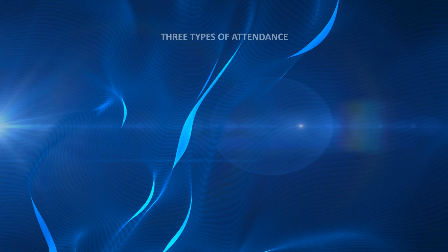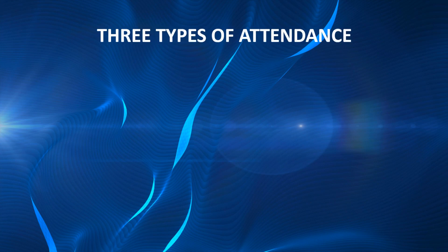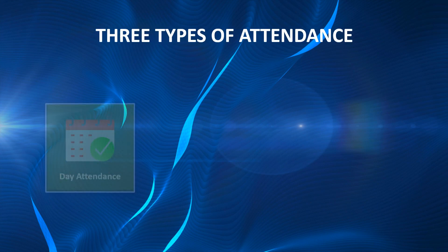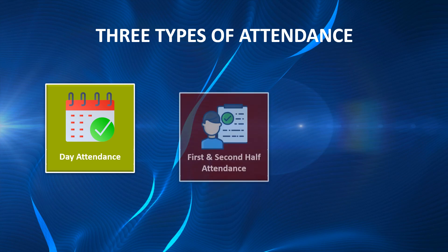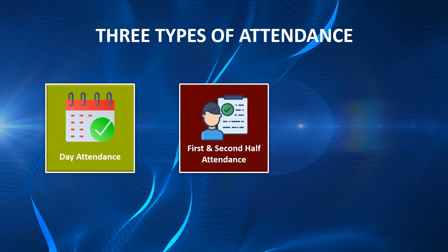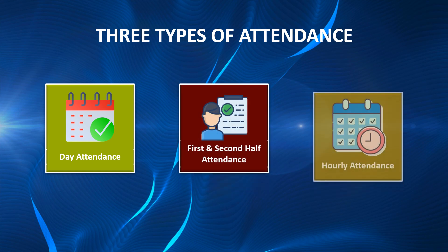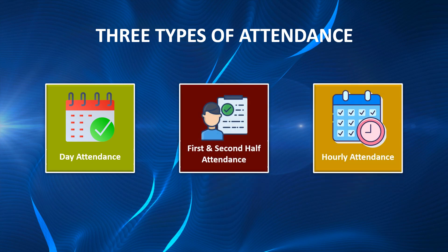The system supports three types of attendance: marking attendance once a day, half-day attendance — that is, first half and second half — and hourly attendance.